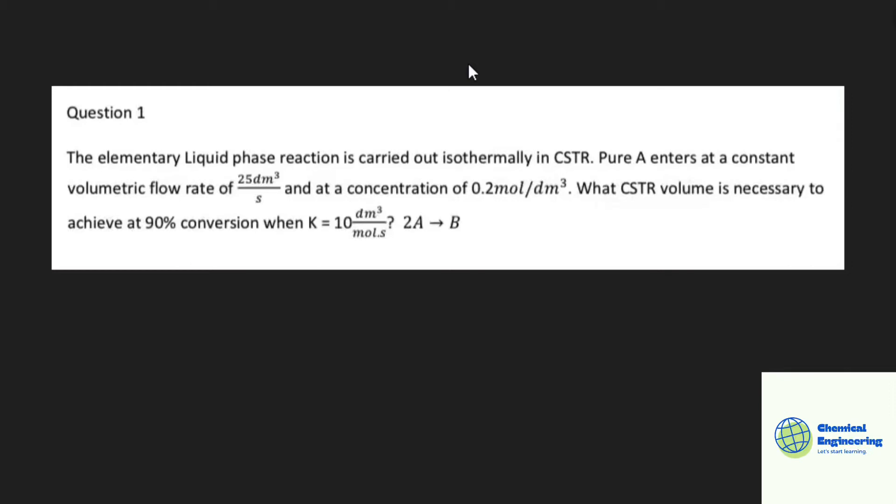Hey guys, welcome back. Let us look at this example. Here we are told the elementary liquid phase reaction is carried out isothermally in a CSTR. Pure A enters at a constant volumetric flow rate of 25 decimeters cubed per second and at a concentration of 0.2 mole decimeter cubed.